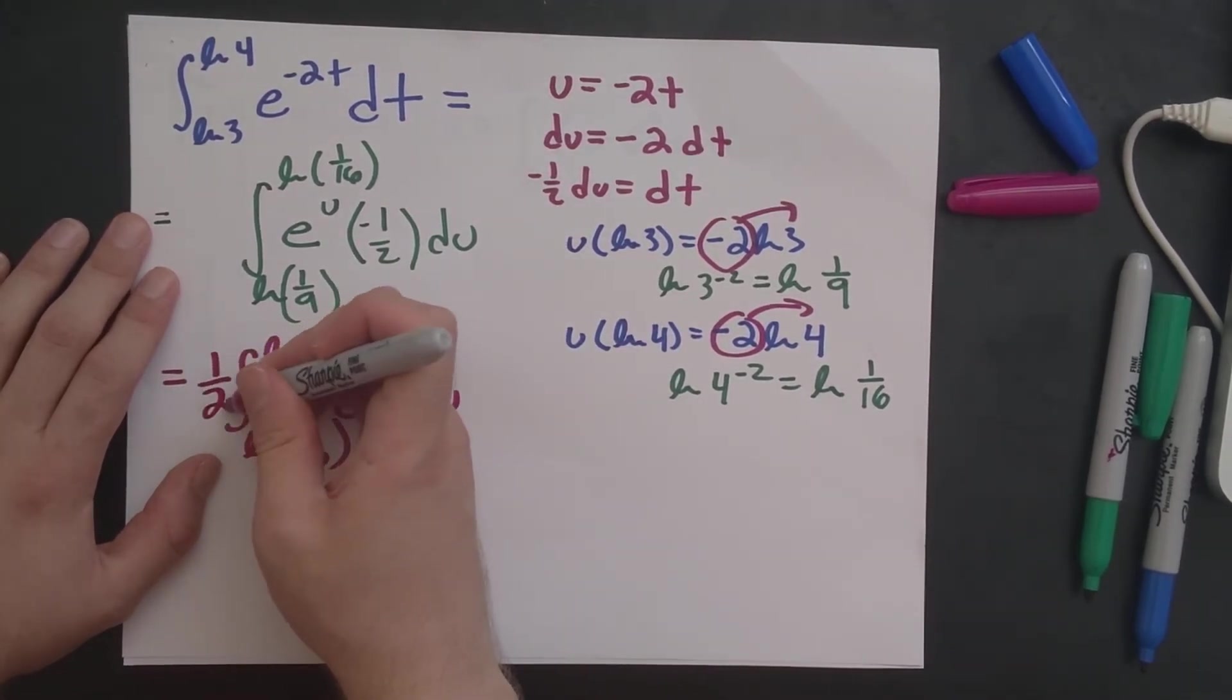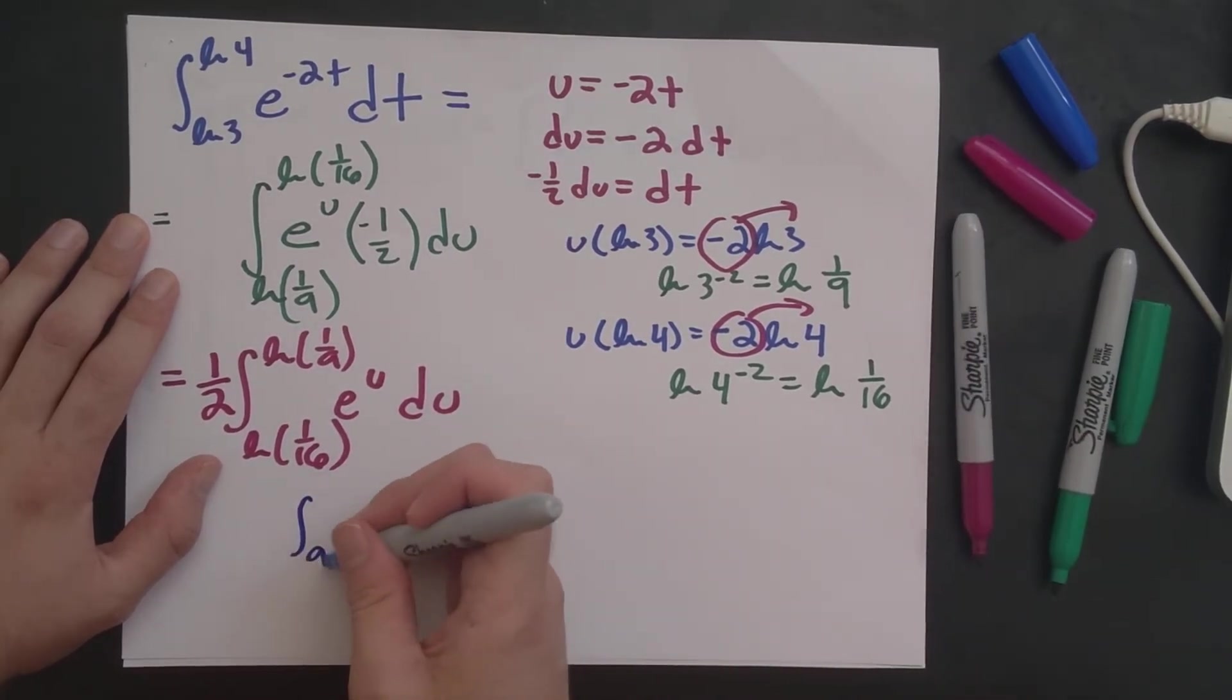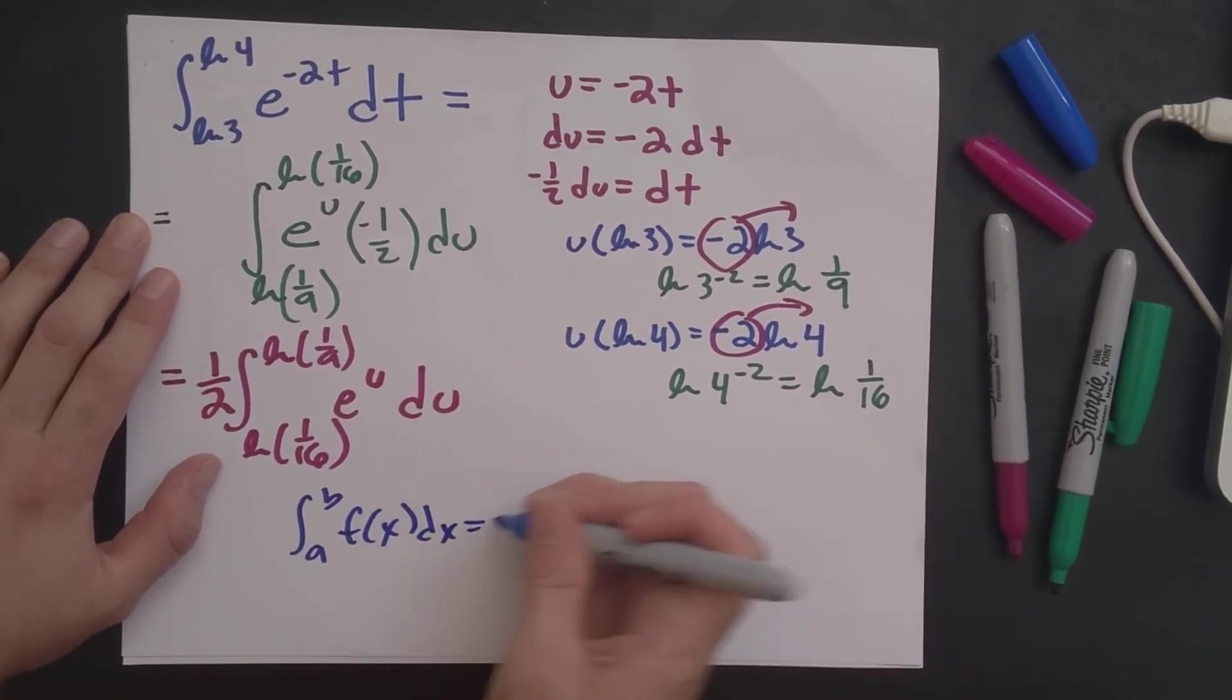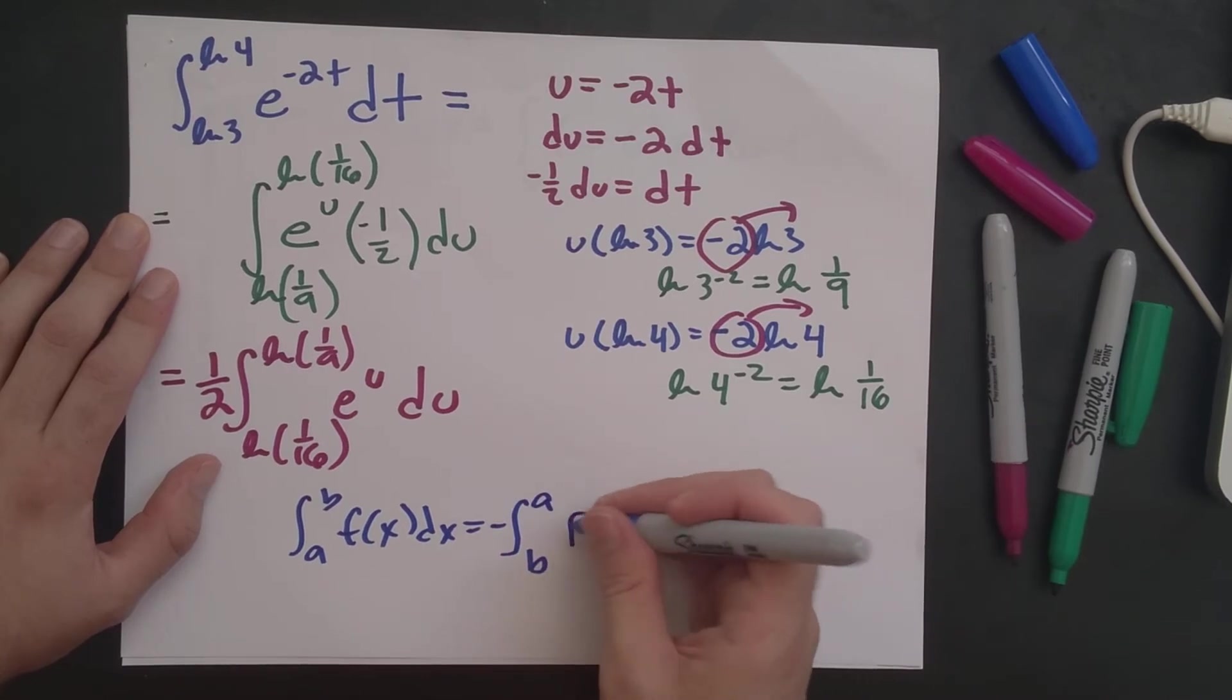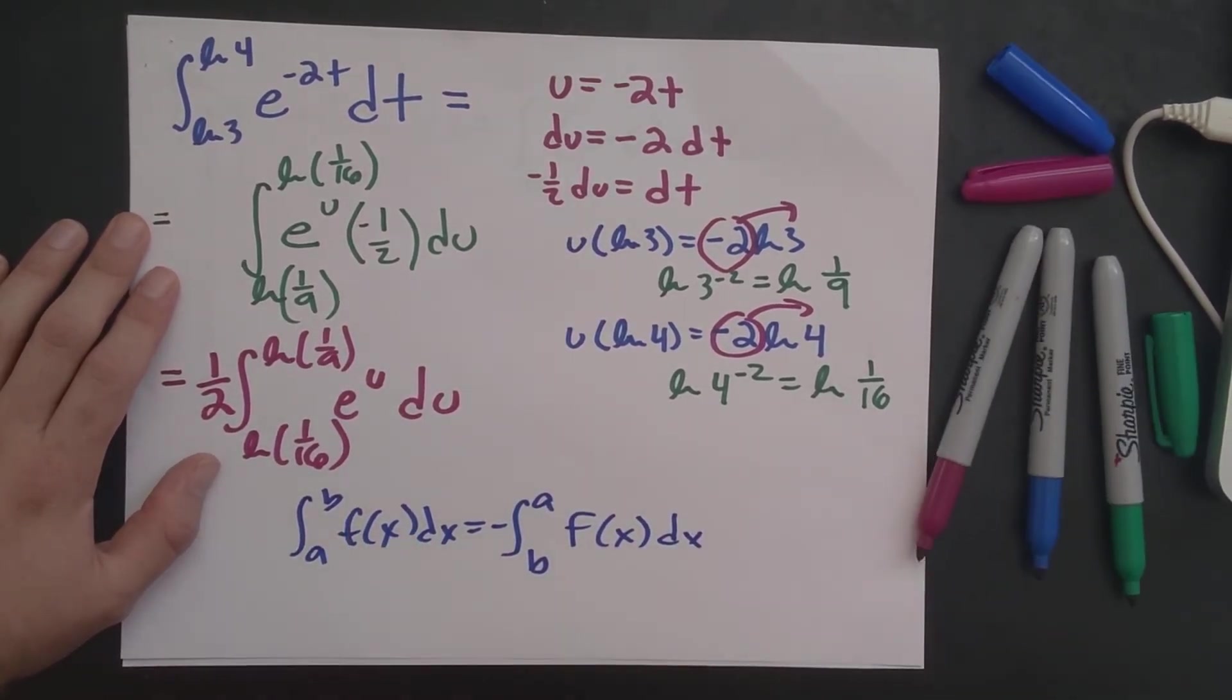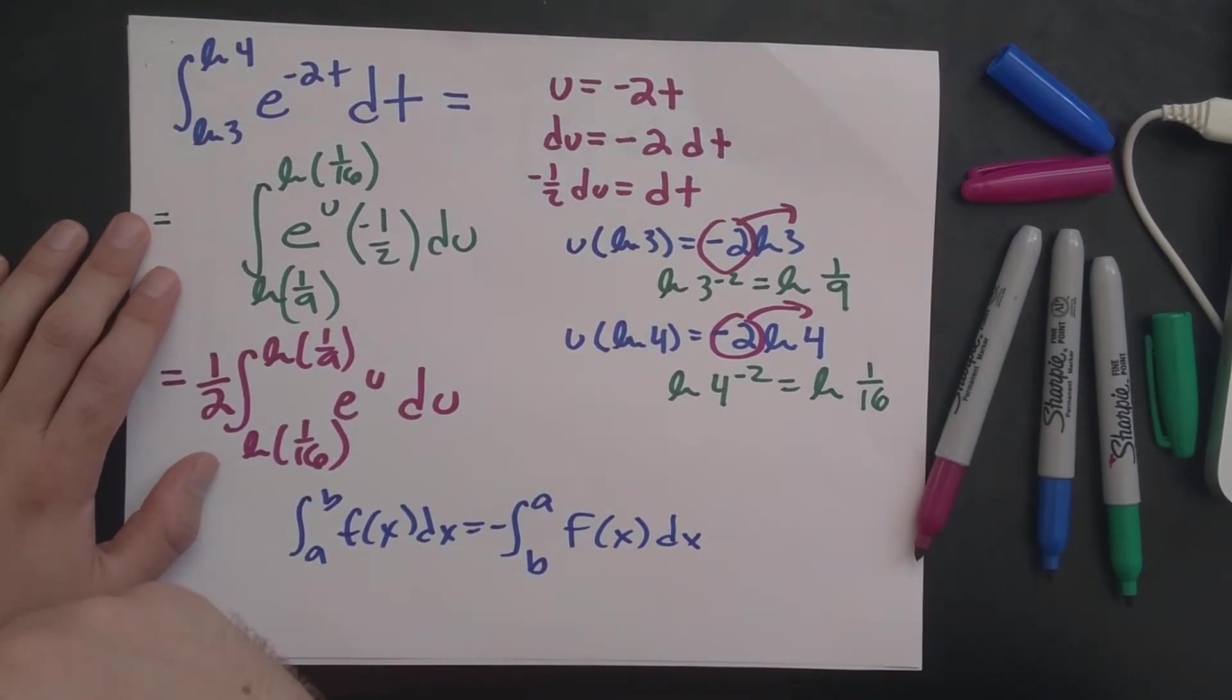So the minus 1 half becomes a 1 half. It just is a theorem that says the integral from a to b of f of x dx is equal to the negative of the integral from b to a of f of x dx. So I think some people are wondering, like, why do we make this switch? Is there a more natural reason?